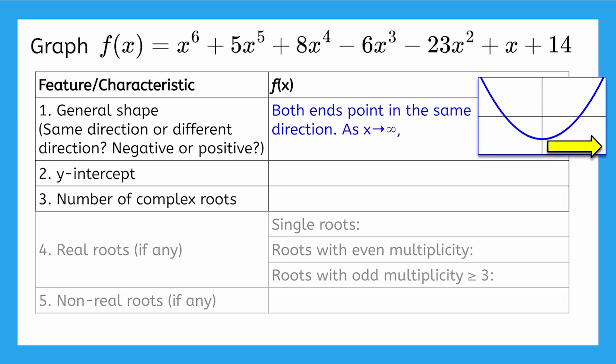As x goes to infinity or gets infinitely large toward the right side of the coordinate plane, y is also increasing toward positive infinity. And as x trends toward negative infinity or gets infinitely small towards the left side of the coordinate plane, y is again increasing in the positive direction or going to positive infinity.